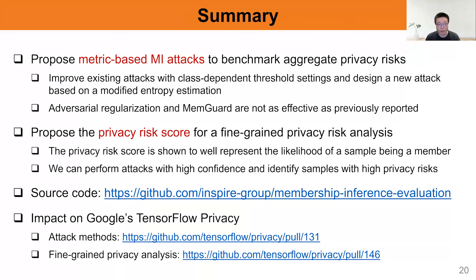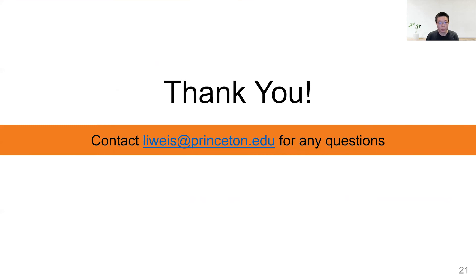To summarize our paper, we first propose metric-based membership inference attacks to benchmark aggregate privacy risks. Then we propose a new metric called privacy risk scale for fine-grained privacy risk analysis. Our code is publicly available on GitHub, and our evaluation methods have already been integrated into TensorFlow Privacy. If you have any questions, feel free to contact me.